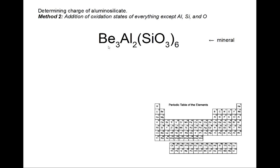In this case, the only other element present is the beryllium. The beryllium has an oxidation state of plus 2 because it's in group 2. There's three of them present, so multiply that by 3 gives us plus 6. Therefore the total charge of everything except the aluminosilicate is plus 6 in this case.